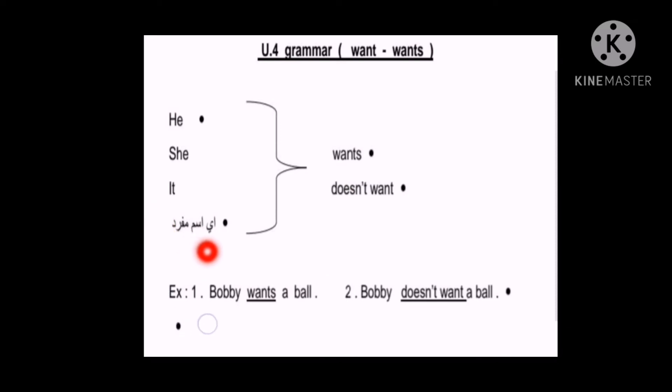Perfect. And here also if we have any singular noun like Maya, Lara, Leen, Ahmed, Muhammad, this is like car, cat, cool, this is like a lion. So this is the singular noun. Now let's read these examples. Example number one: Bobby wants a ball. So here why did we put wants? Because Bobby is a singular noun. Excellent. Bobby doesn't want a ball. So here with want without S because doesn't comes after it, the verb comes base or infinitive without anything.